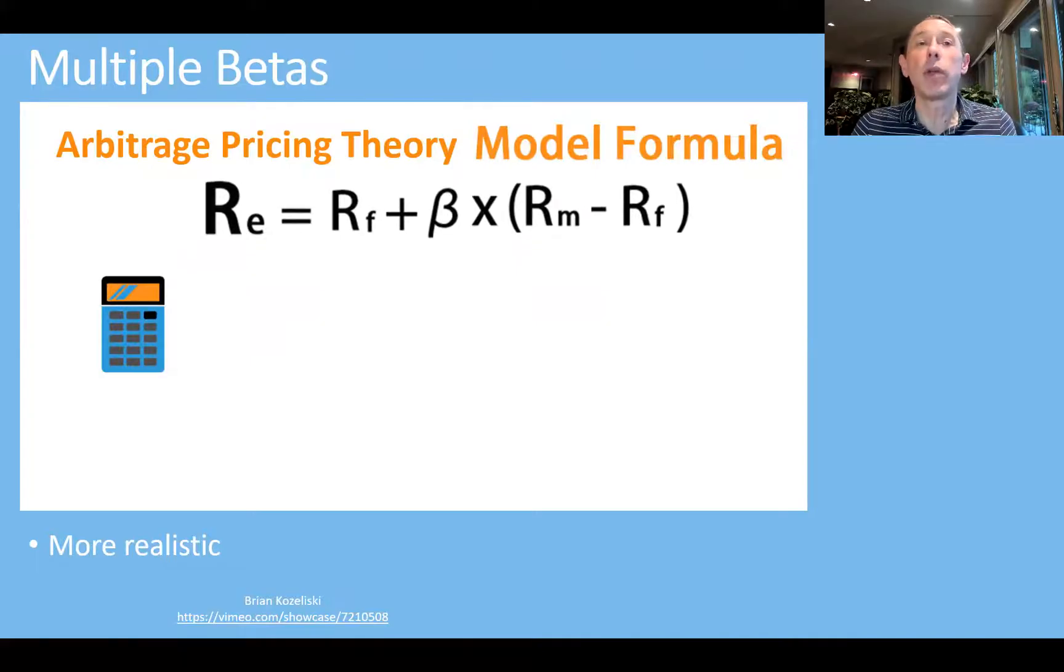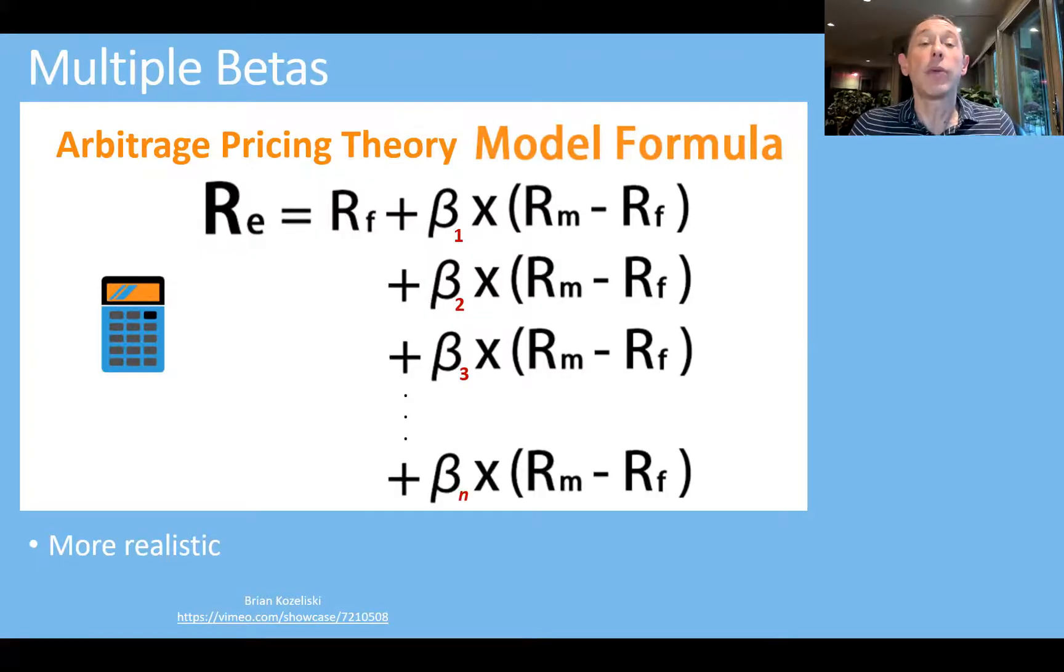So we can look at this formula and say, well, instead of that being the exposure, it's just an exposure to something that impacts asset prices. And there probably are other things. We can add another exposure and another one, and we can just keep going until we have all the exposures that we think impact prices. This gives us a more realistic model to price assets.